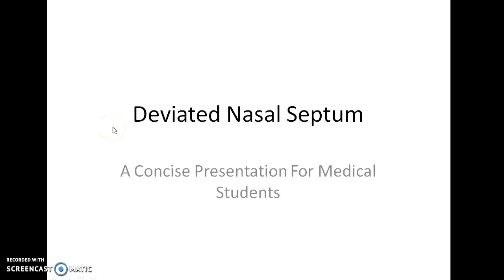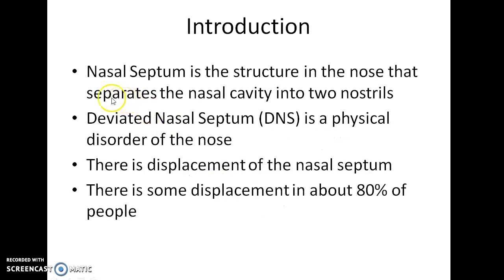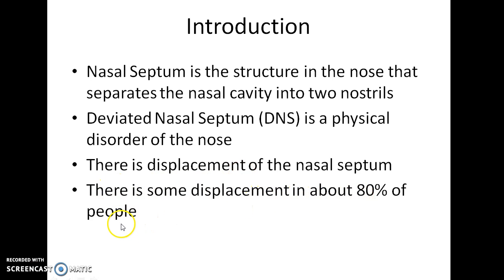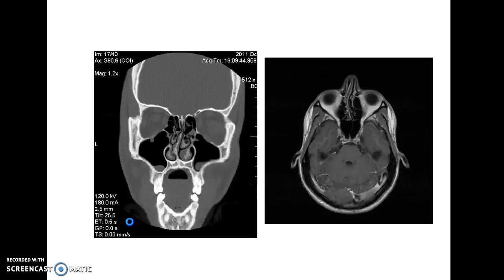This is a concise presentation for medical students on deviated nasal septum. The nasal septum is the structure in the nose that separates the nasal cavity into two nostrils. Deviated nasal septum is a physical disorder of the nose involving displacement of the nasal septum. Some displacement occurs in about 80% of people, but they are mostly asymptomatic.